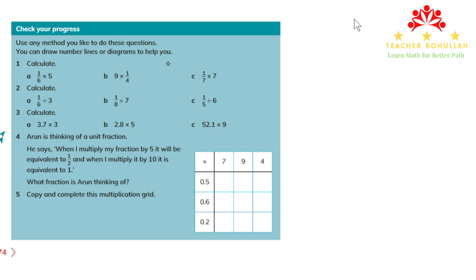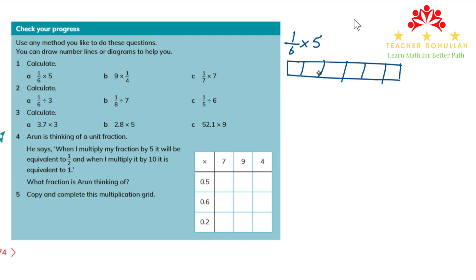The first one is one-sixth times five. The diagram I can draw has six parts. We have six parts here and this one is one-sixth. When we say one-sixth times five it means we have five one-sixths: one-sixth, two-sixths, three-sixths, four-sixths, and five-sixths. So one-sixth times five, checking this part of the diagram, gives us five-sixths.